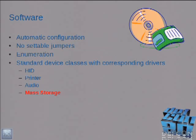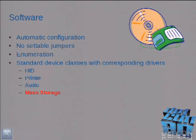There's some software involved. There's automatic configuration — no jumpers or anything like that you need to use. There's a process called enumeration where it basically goes to the device and says 'tell me about yourself.' And within the standard, we have some standard classes for our devices: human interface devices, printers, audio devices. And for today, we want to talk about mass storage devices.